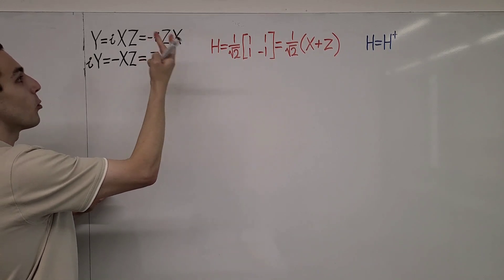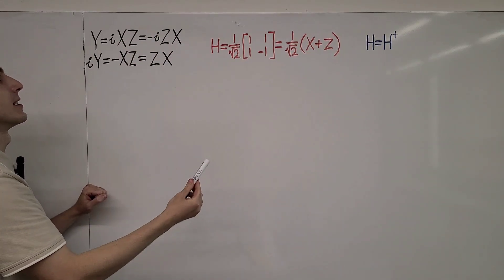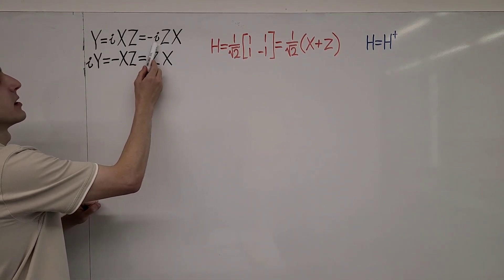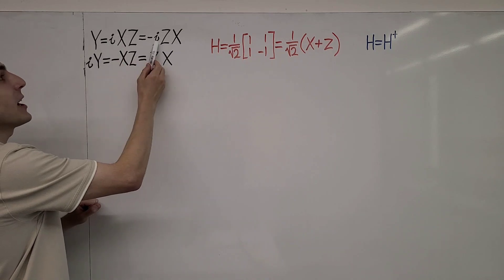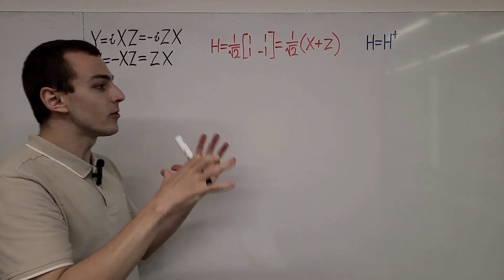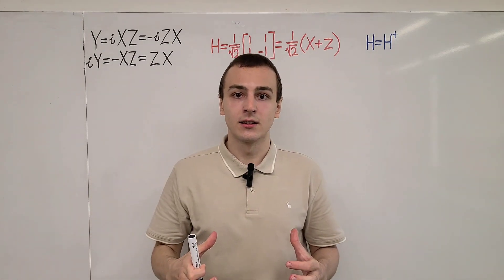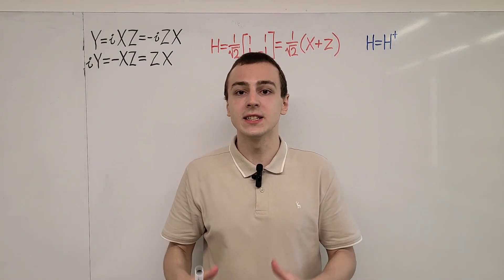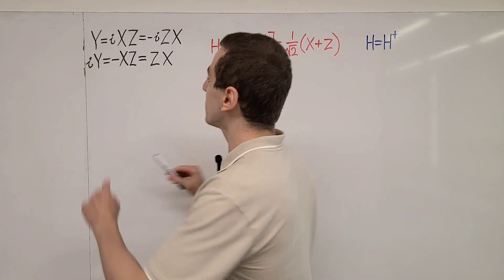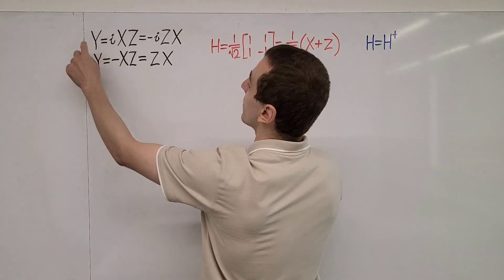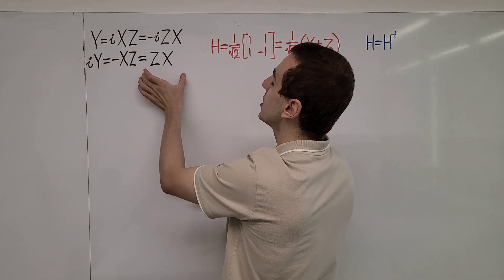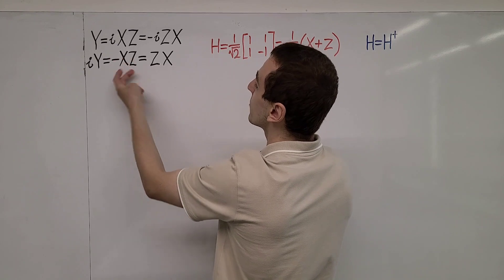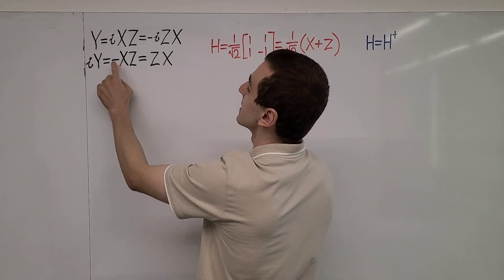And if we swap the order, we have to introduce a minus sign. There is also a global phase factor out the front, and it's plus or minus i. This imaginary unit i is a global phase factor, so it's not physically significant — only relative phases between states are physically significant. And if we multiply all of these by a factor of i, we get an expression we will use later in the video. It shows us that swapping the order of this product introduces a minus sign.